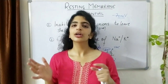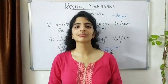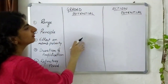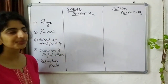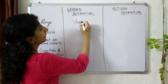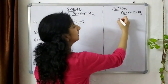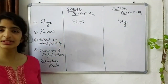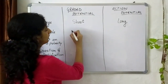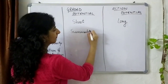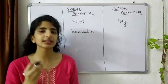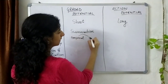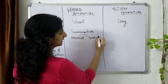Now we are going to discuss the difference between a graded potential and an action potential, both of which arise from an external stimulus and change this resting membrane potential. The first distinction is range: a graded potential is a short-range potential, while an action potential is long range. The second is the principle they follow — a graded potential follows the principle of summation. This summation can occur over time, called temporal summation, or across space, called spatial summation.